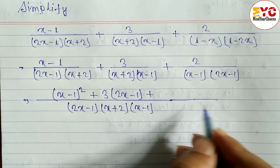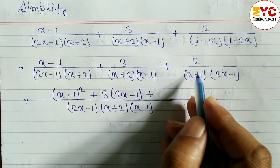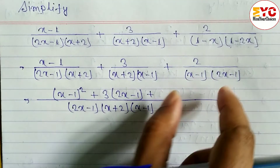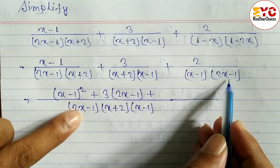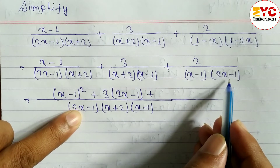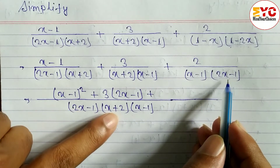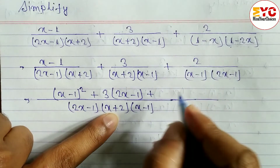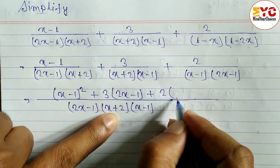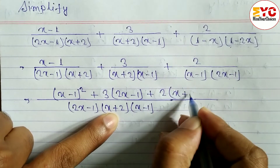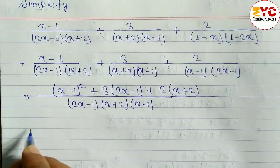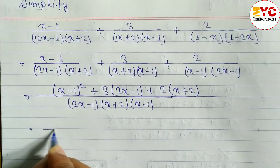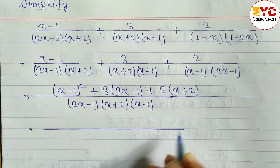For the third term: x minus 1 cancels, 2x minus 1 cancels — remaining is x plus 2. Multiply by 2, so we write 2(x plus 2). Hope you understand up to here. Now we open the brackets.